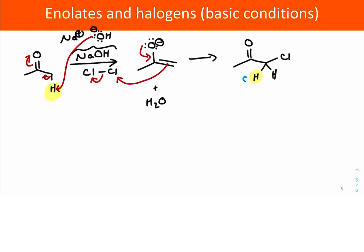much larger delta plus on the alpha protons from the chlorinated species because electron density is getting pulled away from those protons and toward the chlorine atom. That makes them more delta positive and more reactive, more acidic than the original starting protons. So now as sodium hydroxide molecules are mixing around in the solution,